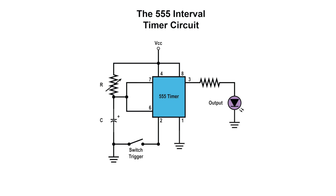The time period is determined by the value of the two external timing components R and C. When the switch opens, the external capacitor is held discharged by a transistor inside the timer. When the switch is closed, it releases the short circuit across the capacitor and triggers the LED into conduction — this is when the timing period begins. Capacitor C starts to charge through resistor R. When the charge on the capacitor reaches two-thirds of the source voltage, the timing period ends and the LED is automatically switched off. During this time, the capacitor discharges to be ready for the next triggering sequence.